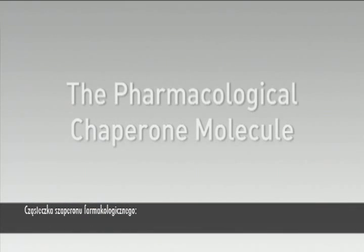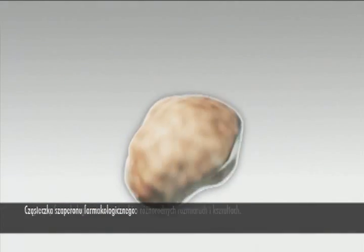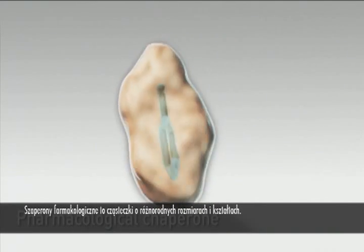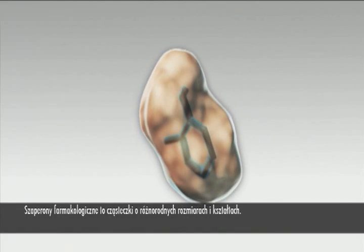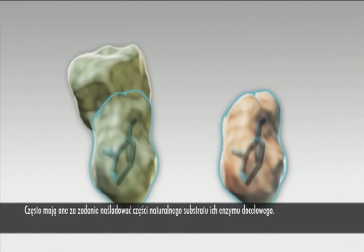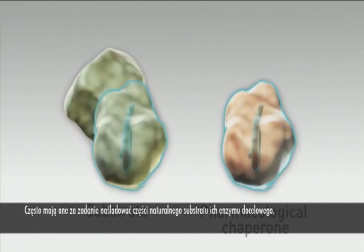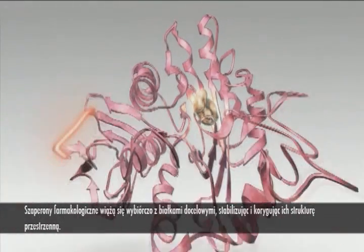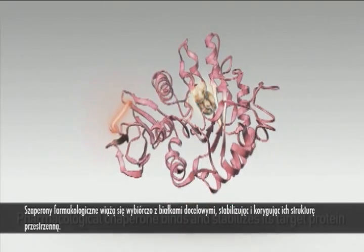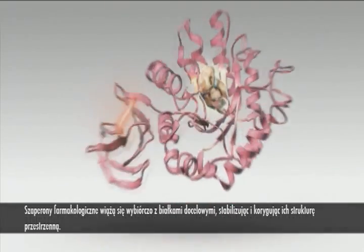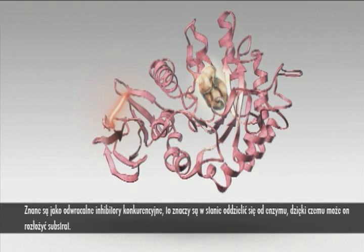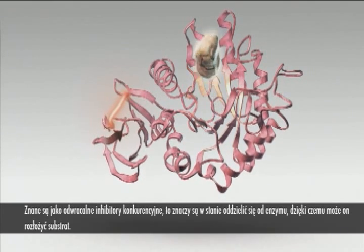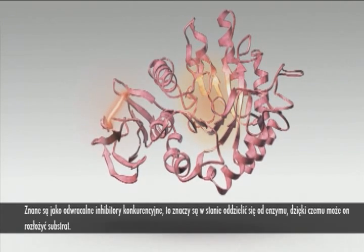The Pharmacological Chaperone Molecule. Pharmacological chaperones are molecules with a variety of different sizes and shapes. These molecules are often designed to mimic part of the natural substrate of their target enzyme. Pharmacological chaperones selectively bind to their target protein and stabilize the correct 3D conformation. They are known as reversible competitive inhibitors, which means they can detach from the enzyme so that it can degrade the substrate.